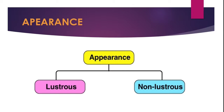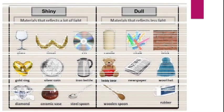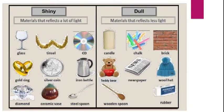Lustrous materials are also called shiny materials and they reflect a lot of light. You can see lustrous materials from a far off distance. Examples are like glass, CD, gold ring, silver coin, steel spoon, etc.